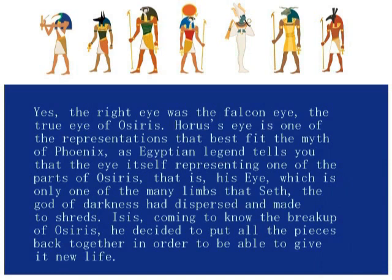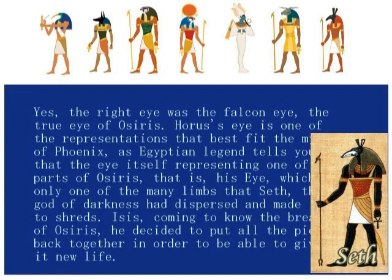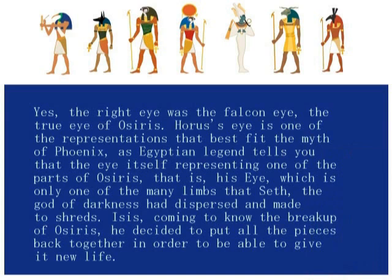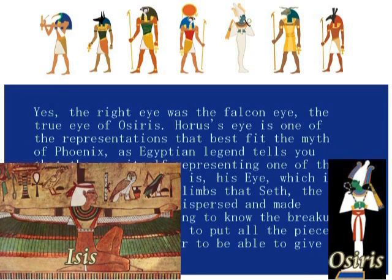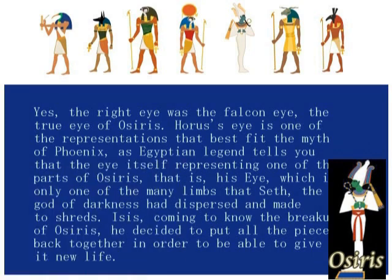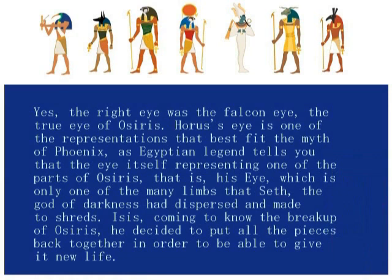そうです。右目はファルコンの目で、オシリスの真の目です。ホルスの目は、フェニックス神話を最もよく表現したものです。つまり、エジプト伝説によれば、目そのものがオシリスの一部を示しているということになります。言い換えると、彼の目は、セス、つまり暗黒の神がバラバラにした手足の一部にしか過ぎません。イシスはオシリスの一部と知るようになり、それに新しい生命を与えるため、そのバラバラになった体を一つにまとめたのです。